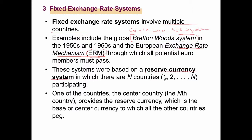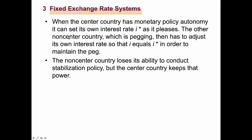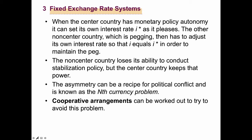When there are N countries from country one to country N, they pick one major economy that has relatively superior performance among the member countries and set that Nth country's currency as the base currency. Once this base currency is determined, all other countries fix their exchange ratios against it. The central country then has the freedom to decide on its own monetary policy — what we call monetary policy autonomy.